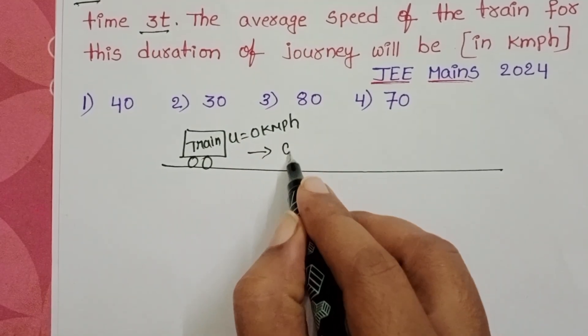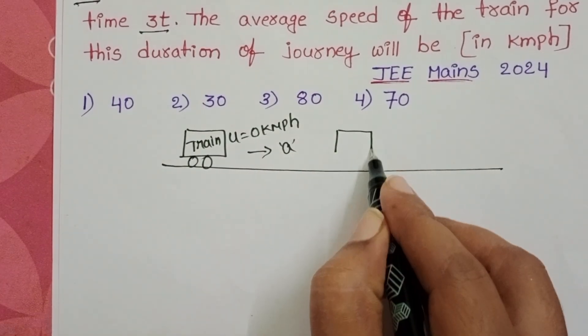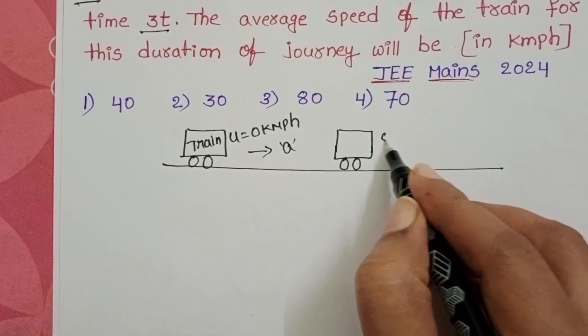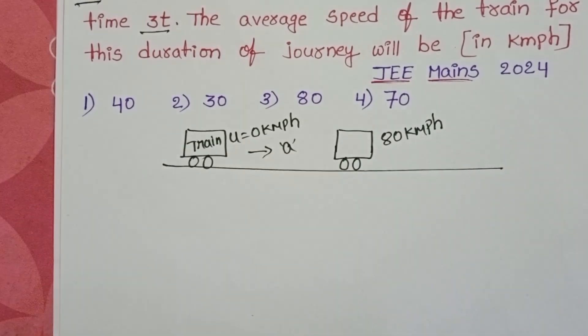After then this train accelerates uniformly. And after time t, this train attains a speed of 80 km per hour. So, what is the initial speed of the train?